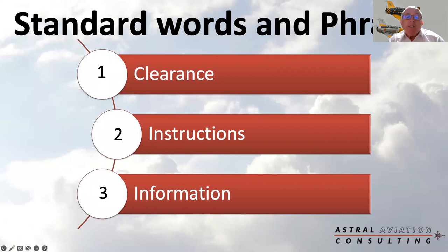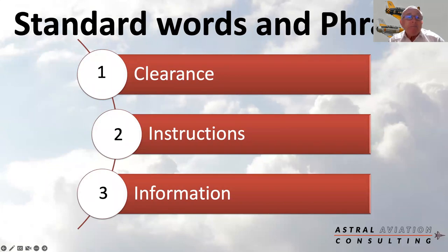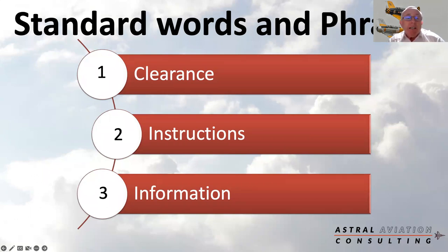All radio or RT messages comprise one or more of the following elements: a clearance, instructions, or information. A clearance requires strict compliance and must be read back verbatim — the controller will not let you proceed until you read it back. Instructions should be followed where practically possible and safe to do so, and in most cases you read those back too. Information is provided to assist the safe conduct of the flight and shouldn't be read back. Roger and Wilco can acknowledge short and unambiguous instructions. Pilots should be aware to transmit only those elements that are required, and avoid being overly verbose.